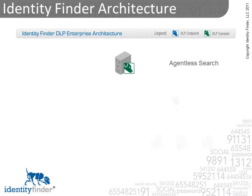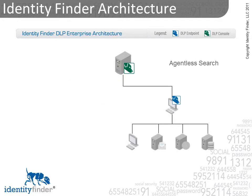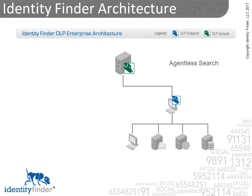You can also search other computers, web servers, or database servers without installing Identity Finder using agentless search. From a single administrative workstation, you can remotely search other desktops, file servers, or any network device with a hard drive without installing Identity Finder on those machines. As always, the agentless search policies may be set, monitored, and controlled by the centralized DLP Enterprise console.